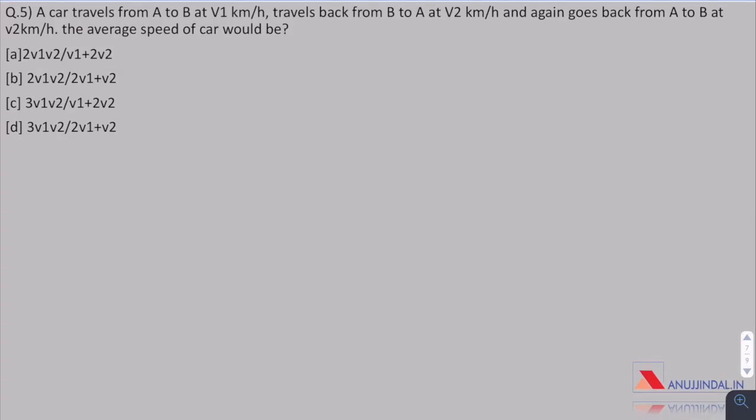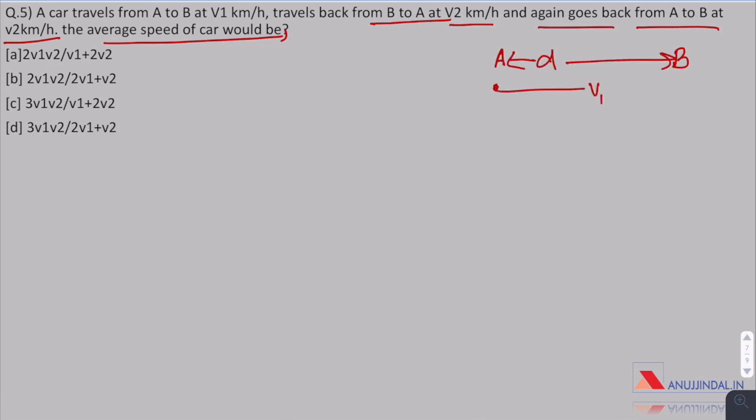Question 5. A car travels from A to B at V1 kilometer per hour, travels back from B to A at V2 kilometer per hour and again goes back from A to B at V2 kilometers per hour. Find the average speed of car. Two points are given A and B. Let the distance between them be D.